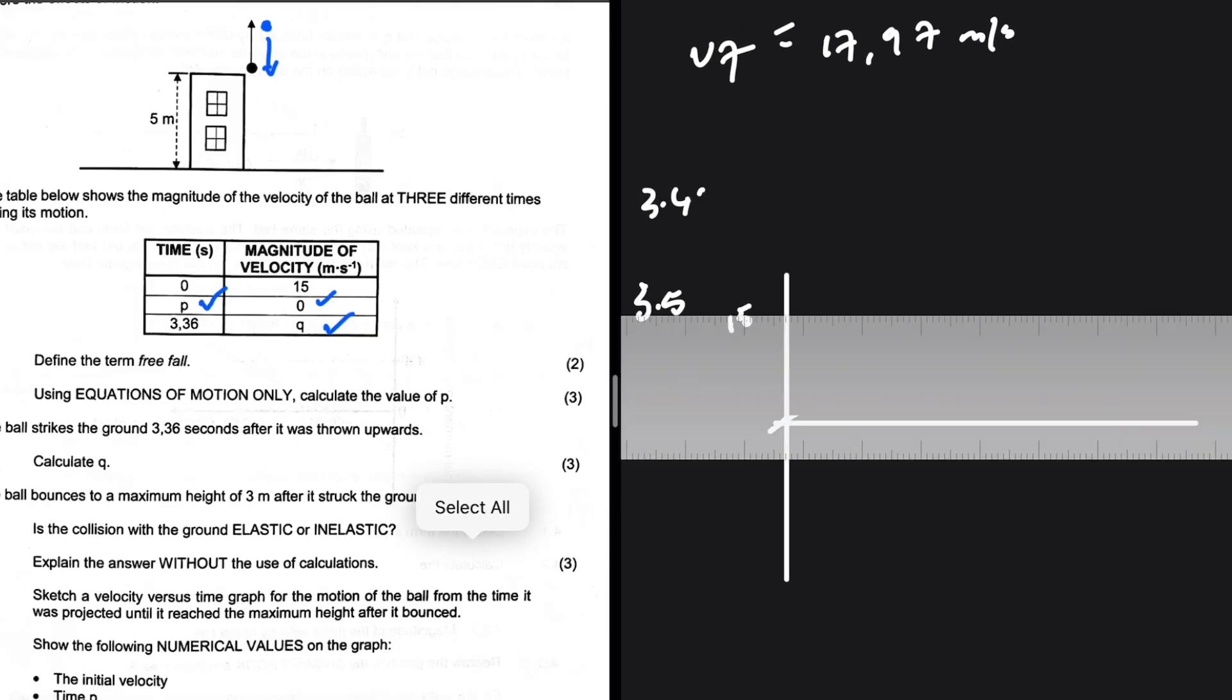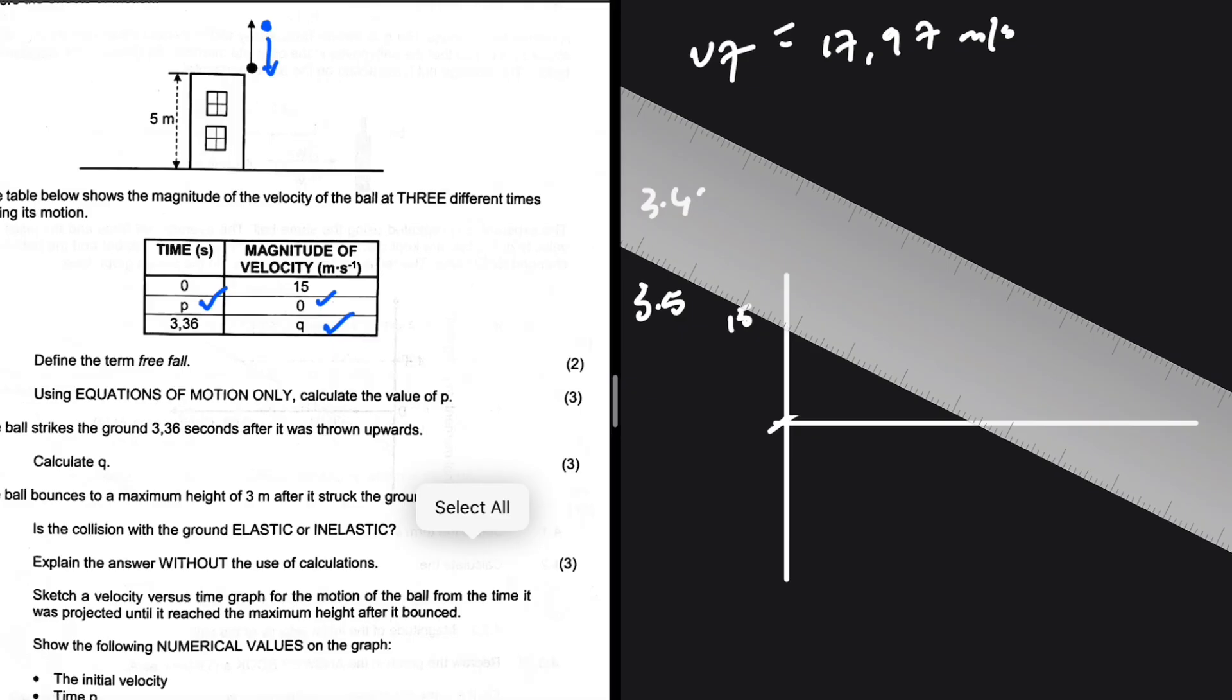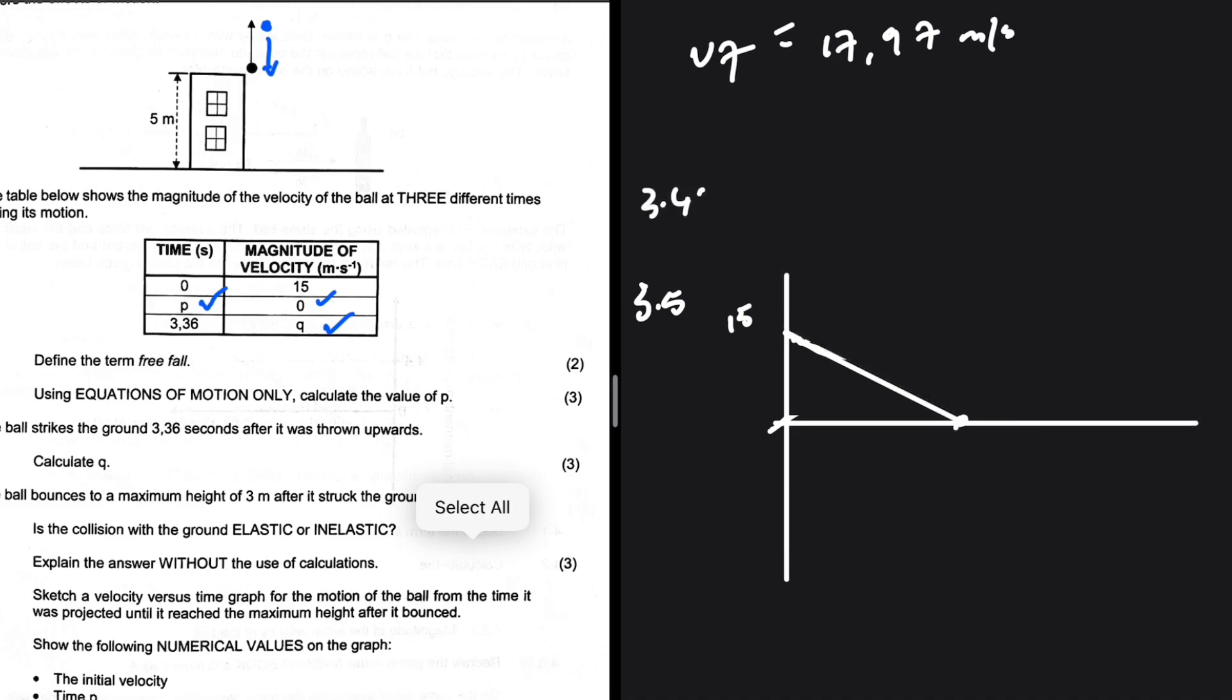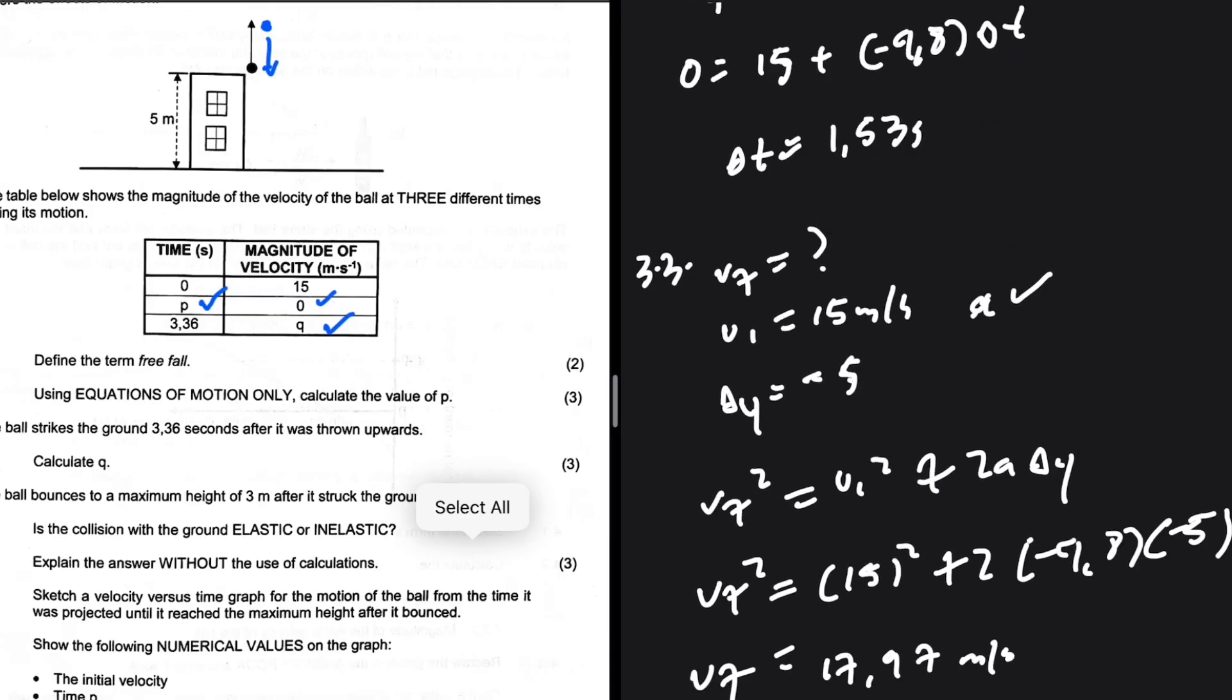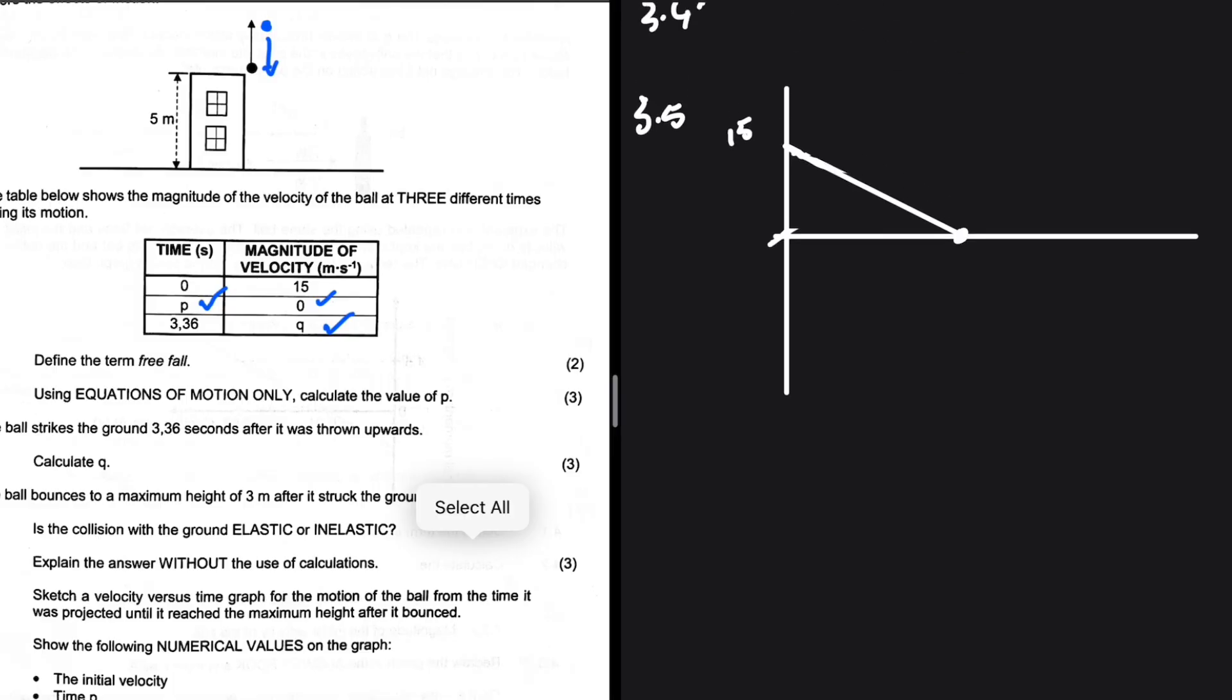So it was projected at 15 meters per second, and then obviously we expect it to decrease until it reaches the maximum height. So the maximum height is at which t? p is 1.53. So here we have 1.53, that is the time it takes to reach maximum height.